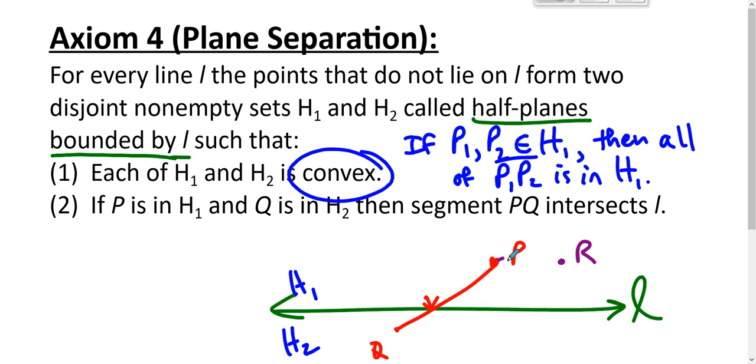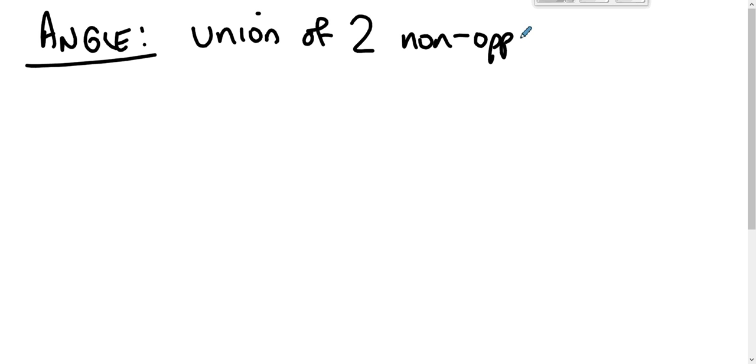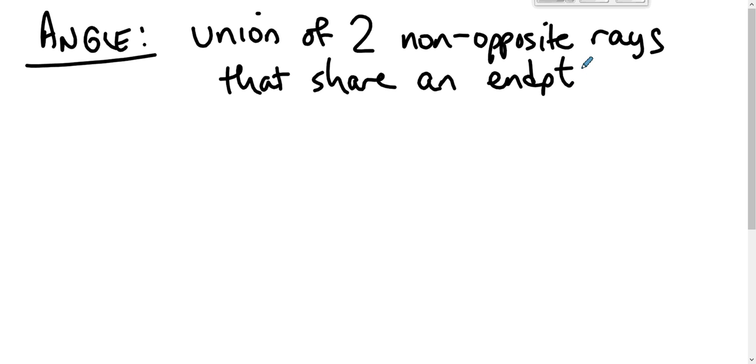We would also talk about angles. We would say, because we can talk about angles now, an angle is the union of two non-opposite rays that share an endpoint. And that sort of makes sense.